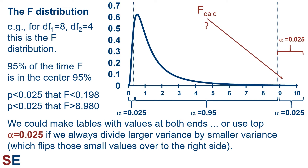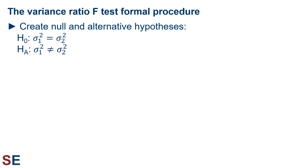For an overall alpha of 0.05, we use just the top alpha equals 0.025 region by using a test statistic where we always divide the larger variance by the smaller variance. This calculation inverts all the very small F-calculated values and essentially flips them to the right side of the distribution. Now let's look at the formal procedure for doing a variance ratio F-test. First, as we always do for every statistical test, we create null and alternative hypotheses. The null hypothesis is that the population variances are equal: the variance of population 1 equals the variance of population 2. The alternative hypothesis is that the population variances are not equal.